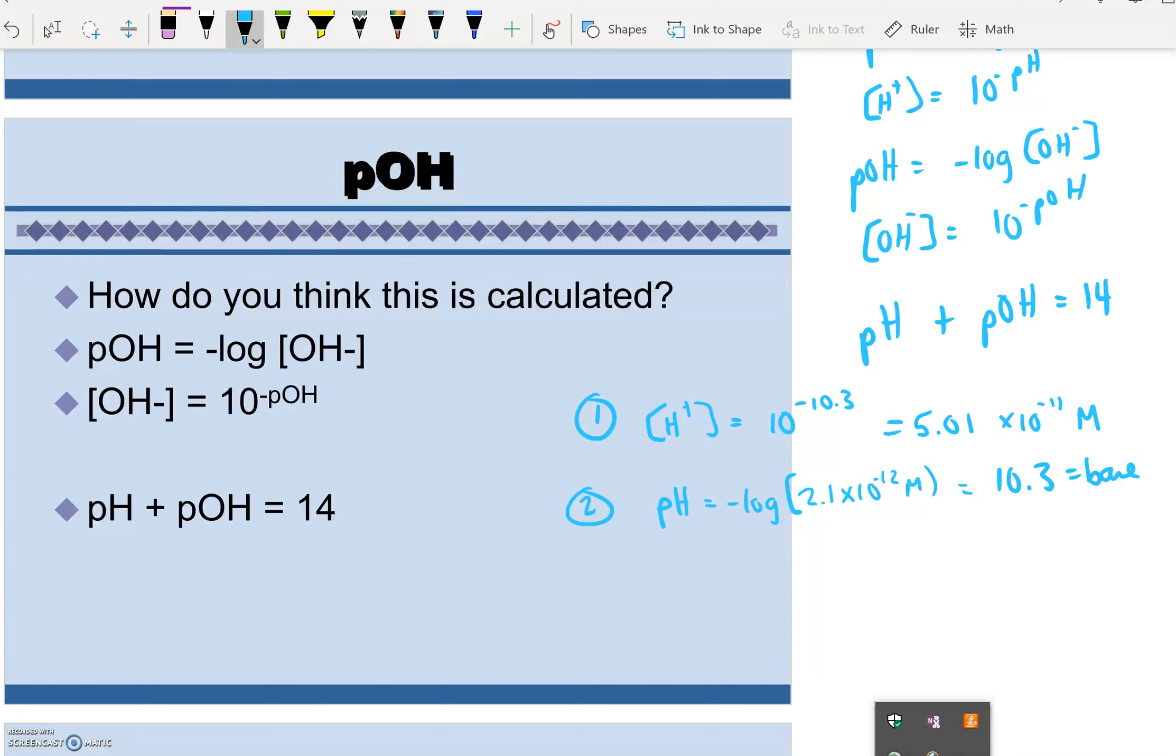Let's look at number 3. Calculate the pOH. If the hydroxide ion concentration is 5.9 times 10 to the negative 1, is this solution acidic, basic, or neutral? So number 3, we want this equation, pOH equals negative log. It gave us our hydroxide ion concentration, which is 5.9 times 10 to the negative 1 molar. So let's type it in. Negative log, 5.9 times 10 to the negative 1. And that gives me a pOH of 0.292.